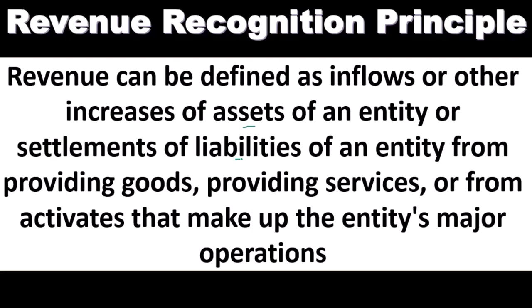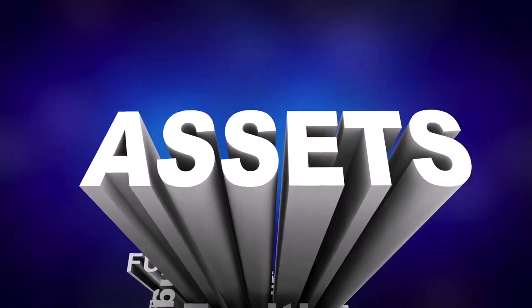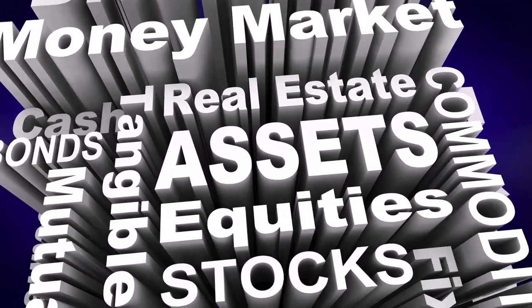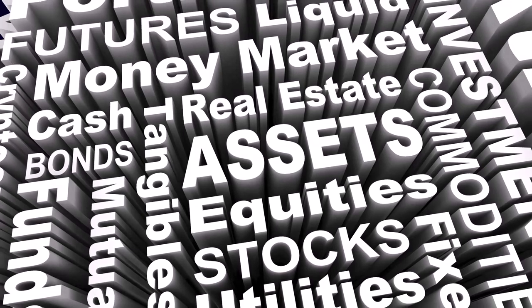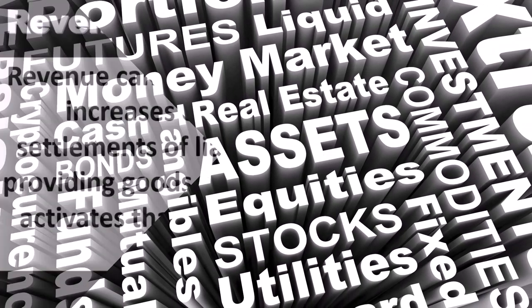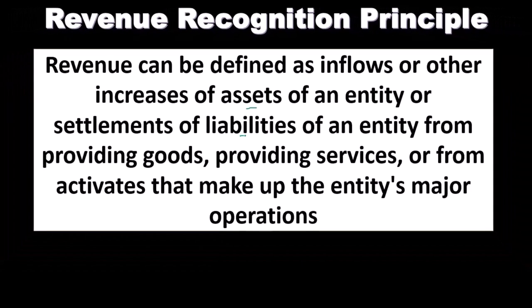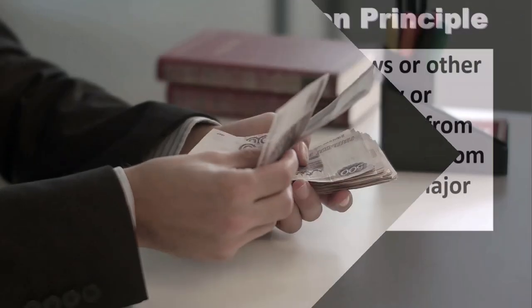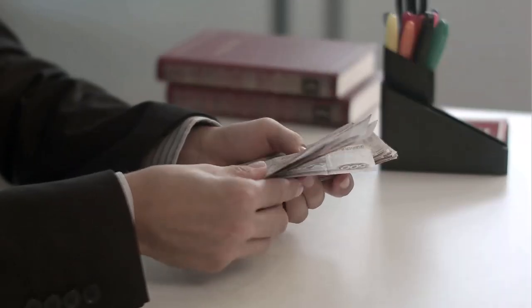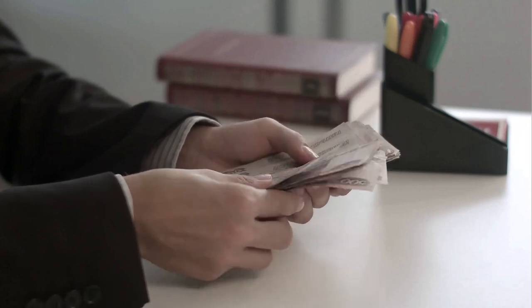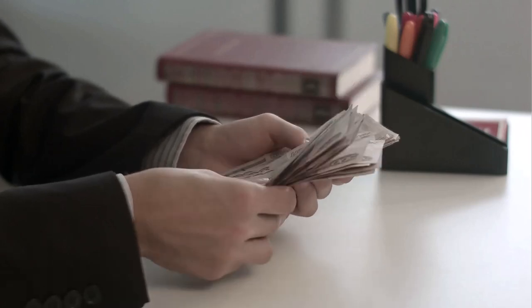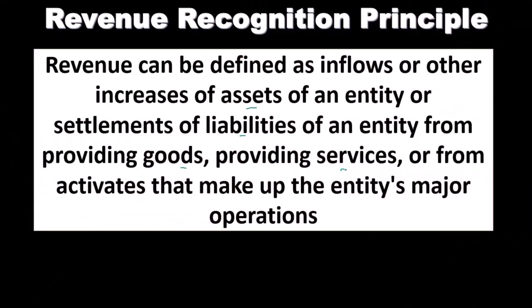Settlement of liabilities is often something that is overlooked. It's quite possible that we make a sale and instead of receiving an asset like accounts receivable or cash, we have a liability that is relieved — reducing a liability. That's not the normal process, as usually accounts receivable or cash goes up, but a liability going down would still qualify as revenue within the definition, from the entity providing goods or inventory.